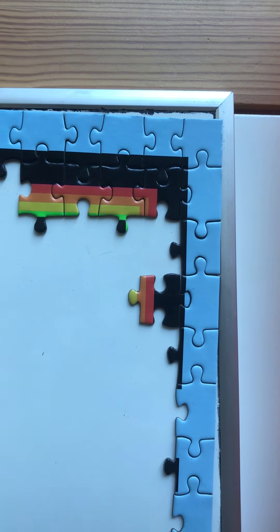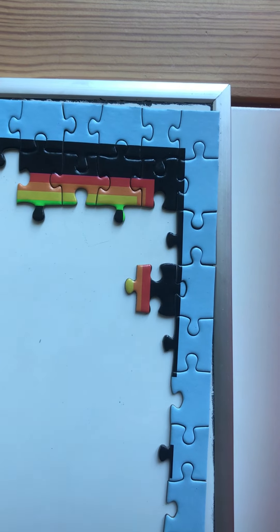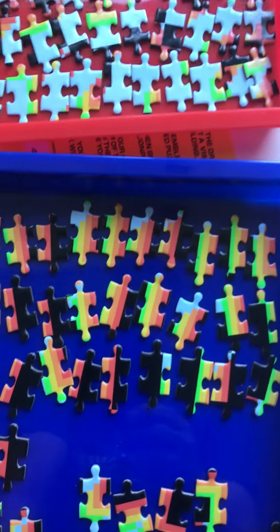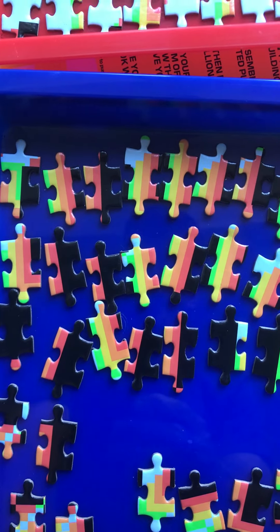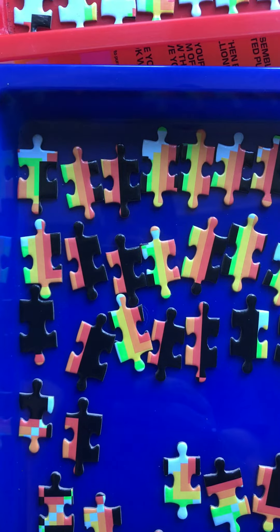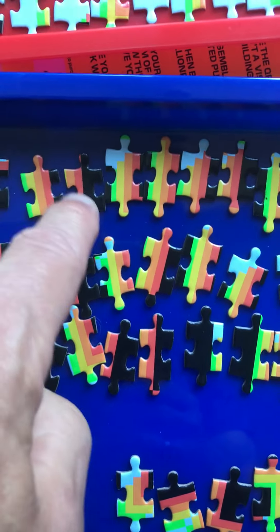So that piece is going to have black on the right side and then probably a stripe of red and orange, maybe yellow. These are all of my stripe pieces, so I want a piece that's got black on the right side and then red starts just to the left of the knob. So maybe this one might fit, so I'll try this one.